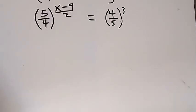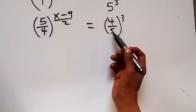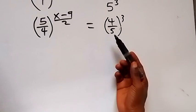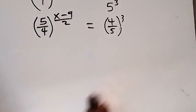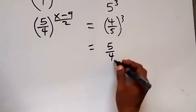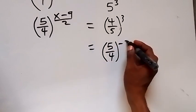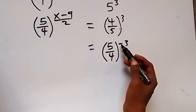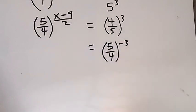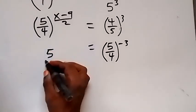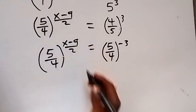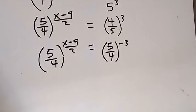From here we can also make the right-hand side to be like the left-hand side — that is, matching the base. We can write this as 5 over 4 as well, meaning we have taken the reciprocal and therefore apply the negative power. So we now have 5 over 4 raised to power minus 3. Then we have 5 over 4 raised to power x minus 9 over 2.